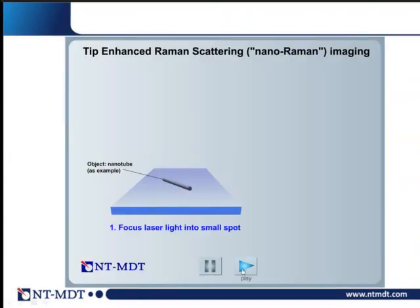The laser energy in resonance with the localized surface plasmon is effectively transferred into the plasmon oscillation, which then re-emits radiation of exactly the same frequency as the laser — but now localized at the very end of the nano antenna. Typically the localization area for sharp tips reaches a dozen of nanometers. Scanning the tip with respect to the sample and collecting the optical response, we obtain optical maps with resolution determined not by the laser spot size but by the light localization area near the nano antenna.